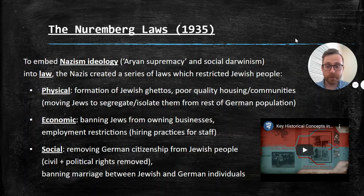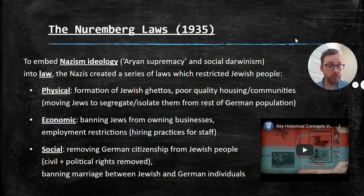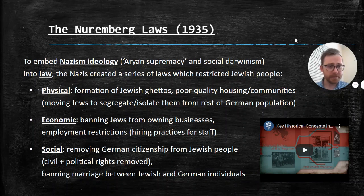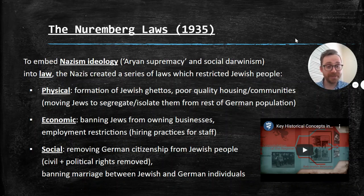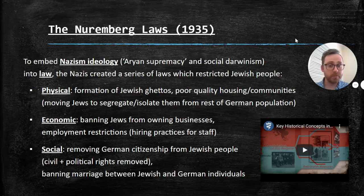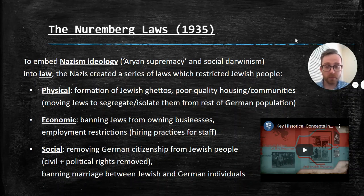Social restrictions — really attacking them as people. German citizenship was removed from Jewish people, so they were no longer considered German residents, which meant that a lot of civil and political rights were removed. They were basically half people, half citizens living in their own country that they may have lived in for generations. There may have been people who didn't even realize they were Jewish — perhaps one quarter or one eighth Jewish — and everything was taken away from them, even if they weren't actively religious. They also banned interfaith relationships, so you could not marry a German if you were Jewish.